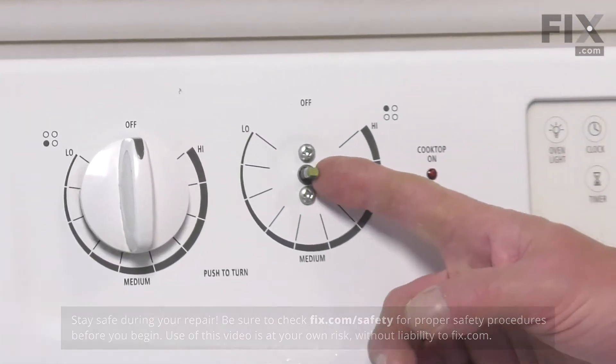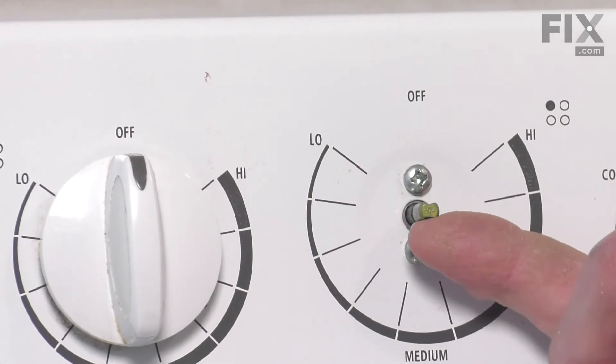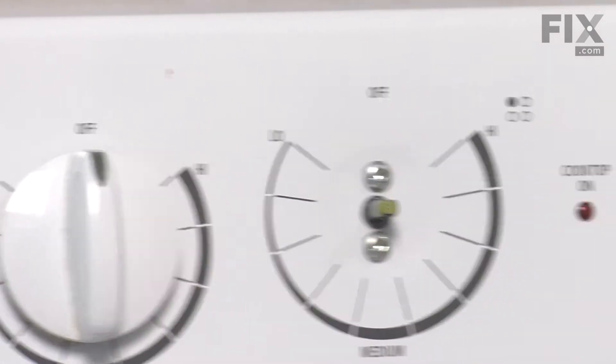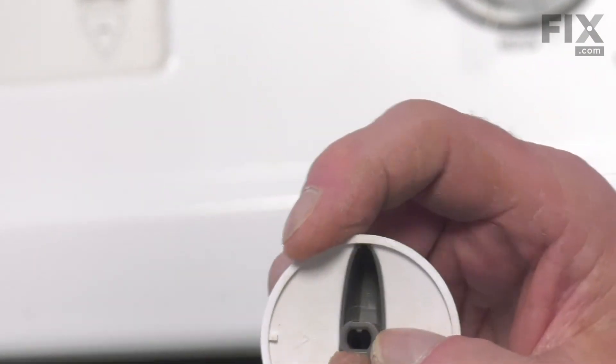Next, just inspect that shaft and make sure that there is still a spring clip that is attached to it and that it hasn't got dislodged and caught inside the centerpiece of that old knob. If so, you'll need to remove it and reattach it to the shaft.